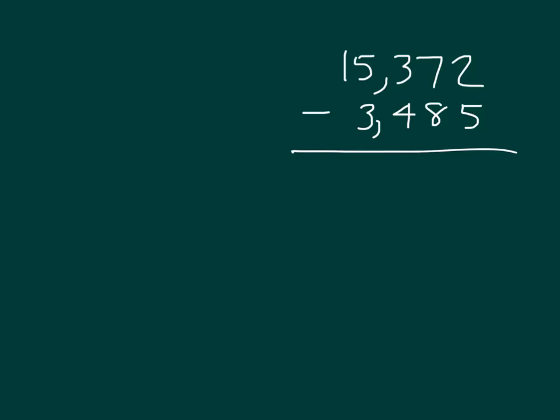Here I have the problem. Let's read it: 15,372 minus 3,485. Watch as I draw a tape diagram where I'll label the whole, I'll label the known part, and I'll also label the unknown part with the variable.